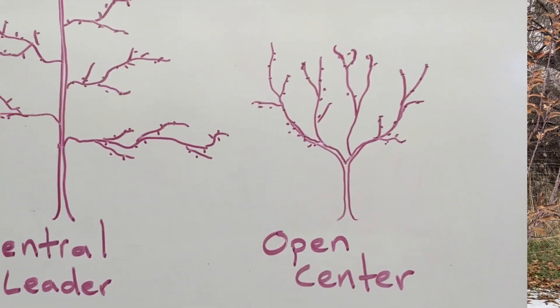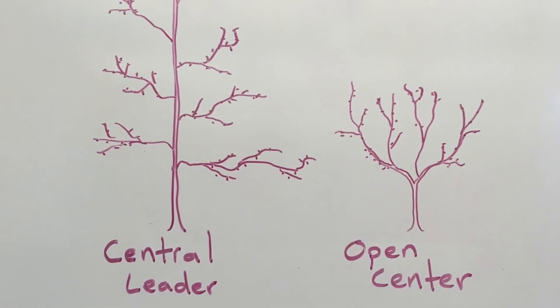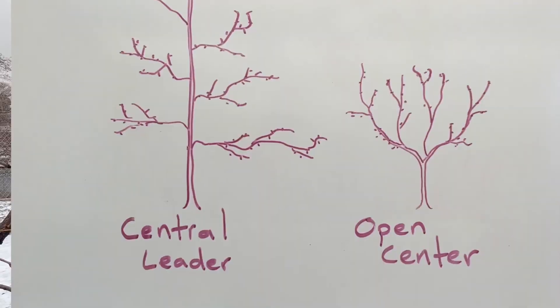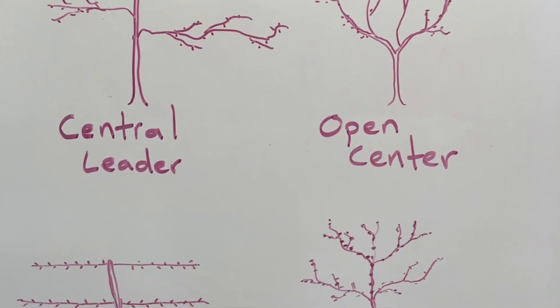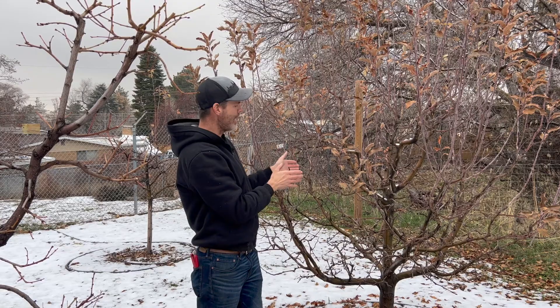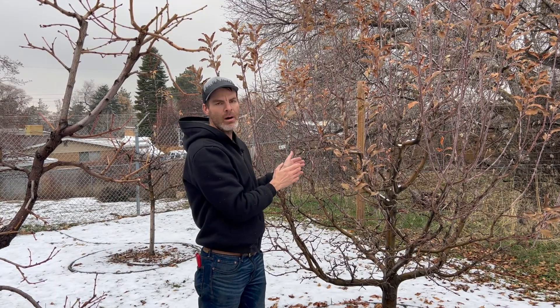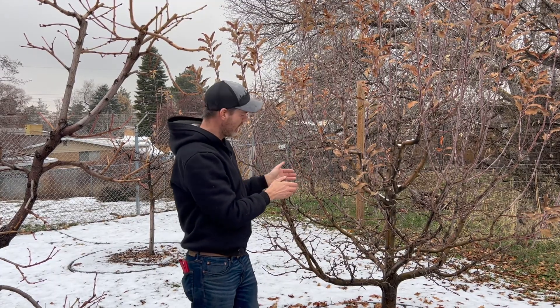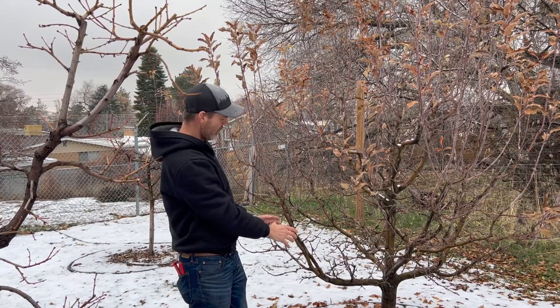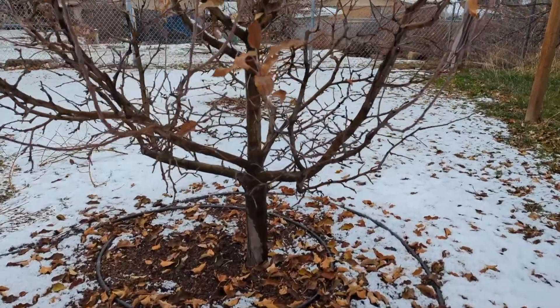There are several different ways to manipulate fruit trees. We have some that are open center, some that are a central leader, and then we have what's called a modified central leader. This is a prime example of an apple tree that has a modified central leader.